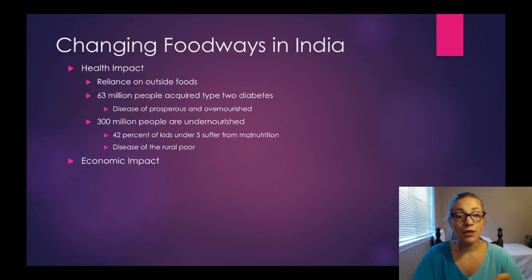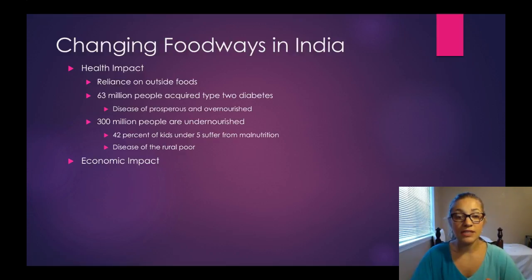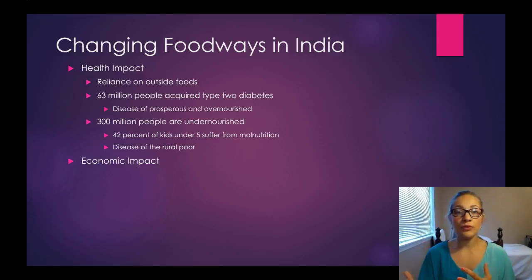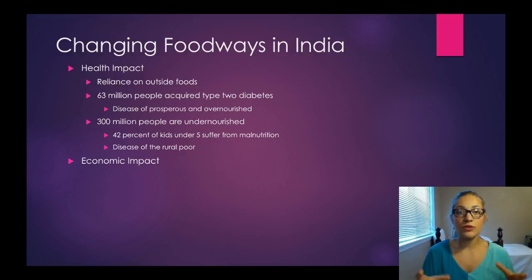At the same time, 300 million people are undernourished, and 42% of kids in India were suffering from malnutrition — a disease of the rural poor. So 63 million people now have access to unhealthy processed foods purchased with cash crop money, while 300 million people have money to buy food but there's no food there to buy, because they're no longer growing it — they're growing cotton to sell as a cash crop.